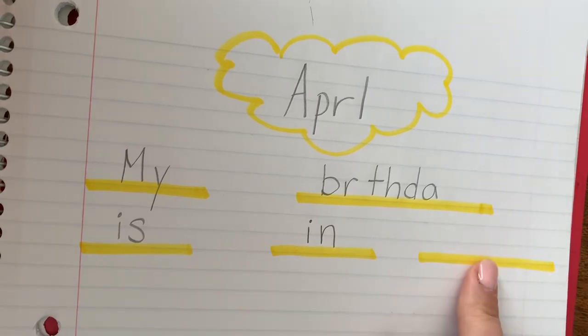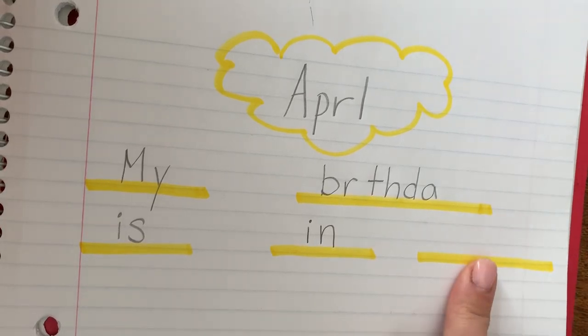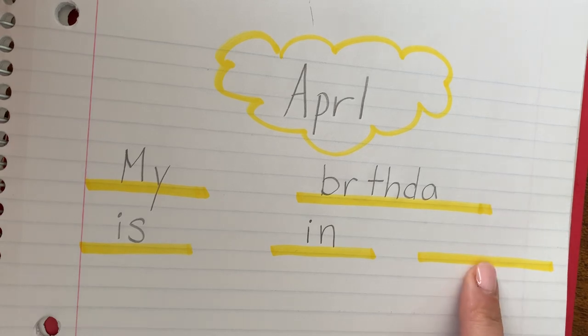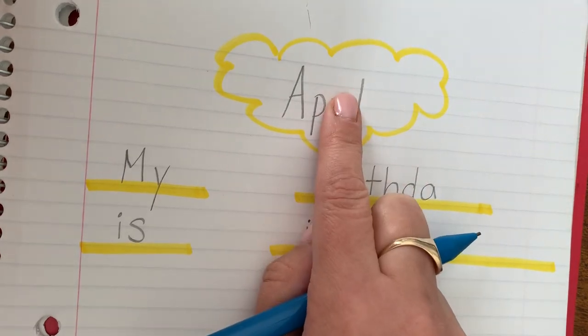And here's where you're going to write your birthday month. I'm going to leave that space blank so that you can write it on your own. Use what you put in your planning bubble.